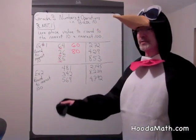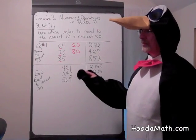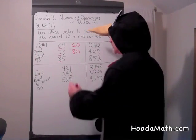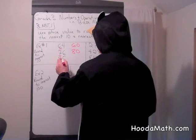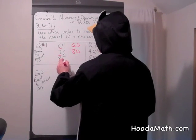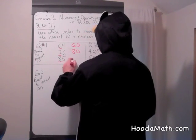Is 85 closer to 80 or 90? Well it's right in the middle, but by convention, if the number to the right of the tens place is 5 or greater, we round up.